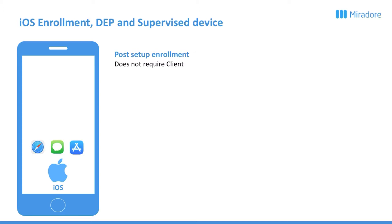The client is only needed if you want to enable location tracking of the device. The enrolment credentials needed can be sent out through an email or SMS, and if you click the link in the email or SMS, you will be automatically enrolled. You could also just create the enrolment credentials and use a web link to enrol the device if you don't have access to SMS or email on the device.